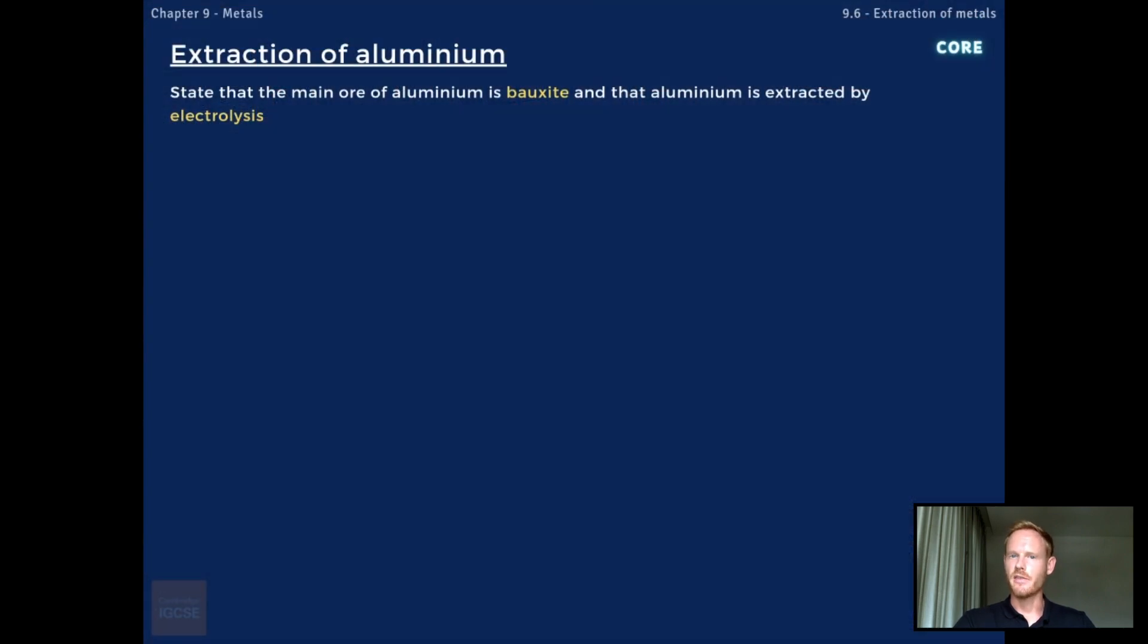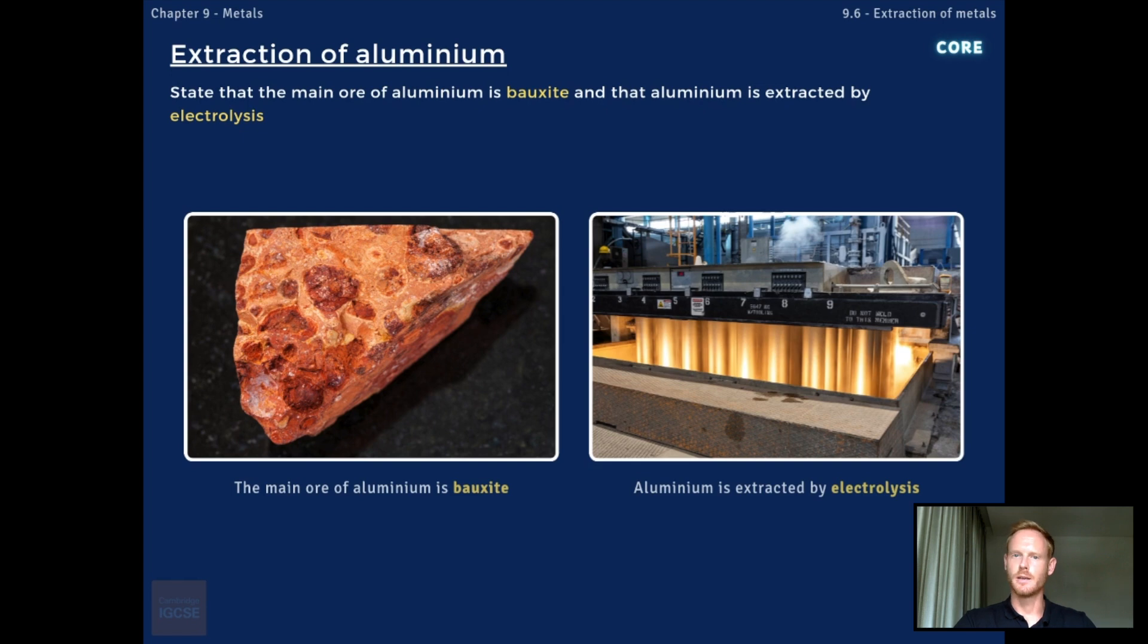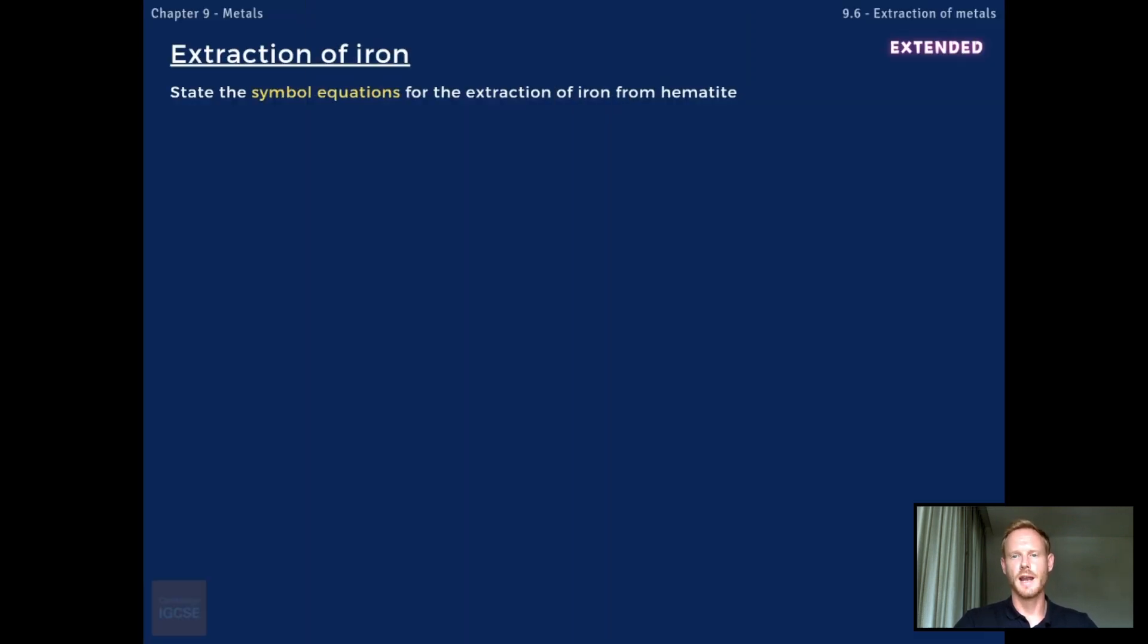Next, you need to state that the main ore of aluminium is bauxite, and that aluminium is extracted by electrolysis. So, unlike iron, aluminium sits above carbon in the reactivity series, which means it cannot be extracted by reduction with carbon. Instead, aluminium is extracted from purified bauxite by electrolysis. Okay, that's everything you need to know for core, so we'll move on now to the extended section. For extended, you need to state the symbol equations for the extraction of iron from iron oxide.